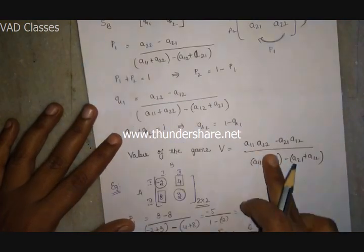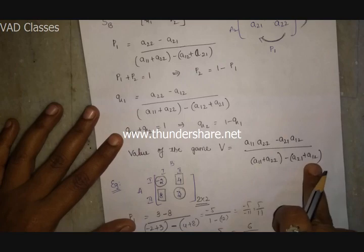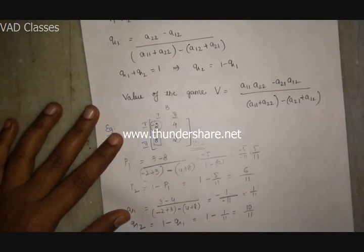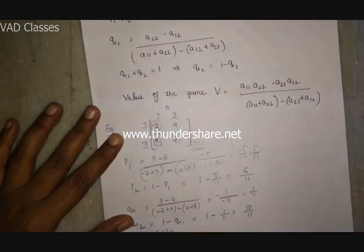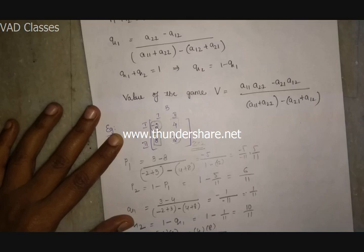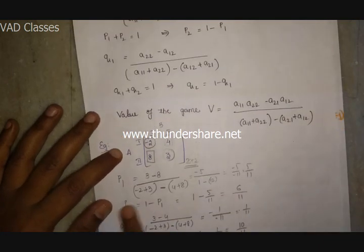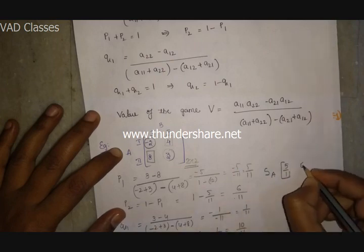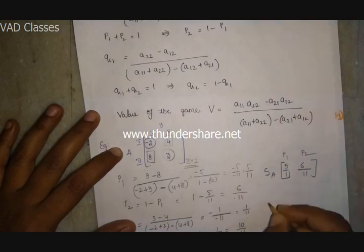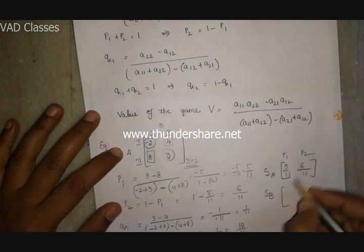The value of the game formula uses the cross (diagonal) elements: V = (A11 × A22 minus A12 × A21) / denominator = [(minus 2 × 3) minus (4 × 8)] / [(minus 2 + 3) minus (4 + 8)] = (minus 6 minus 32) / minus 11 = minus 38... correction: minus 6 minus 32 is minus 38... actually (minus 6 minus 12) / minus 11 = minus 18 / minus 11 = 18 by 11. So the value of the game is 18/11.